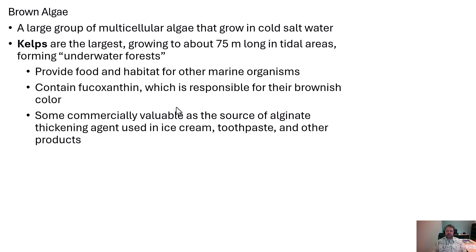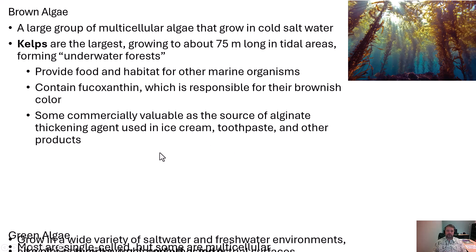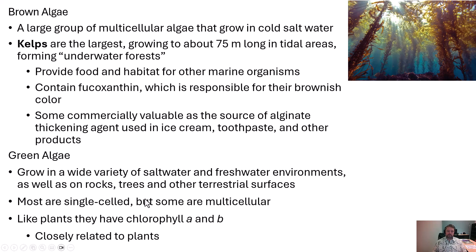People often call multicellular algae plants, but they're not. These are multicellular algae that form kelp forests, which can be extremely thick and long and are very important for food resources and habitats for many marine organisms. From a commercial perspective, they produce alginate, which is a thickening agent used in things like ice cream and toothpaste. We actually get quite a few different thickening agents from algae — alginate is one, and agar is another, which we'll talk about with red algae.